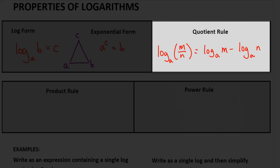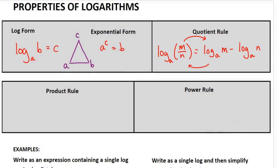That's what allows us to do this rule. Remember, this rule also works both directions — I like to have arrows here as a reminder. If I have something written in expanded form, log base a of m minus log base a of n, I can combine that as a single logarithm. That's oftentimes what our instructions will ask us to do: write the following as a single logarithm. All of these rules go in both directions.